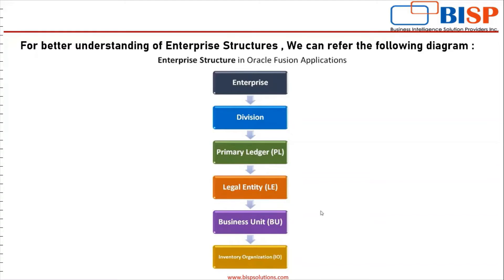Then it comes to legal entity. Legal entity means where our company is registered. For example, if a company is operating its business from four different countries, then it must have four different registrations. So we have to maintain the record of different registration details in our Oracle Fusion instance.